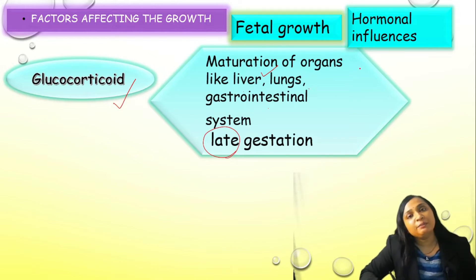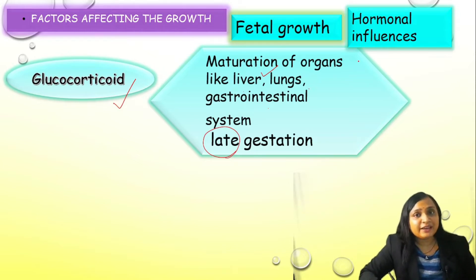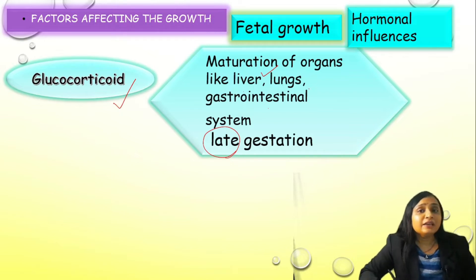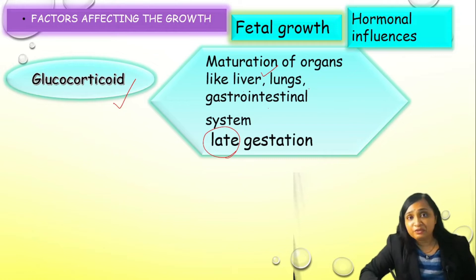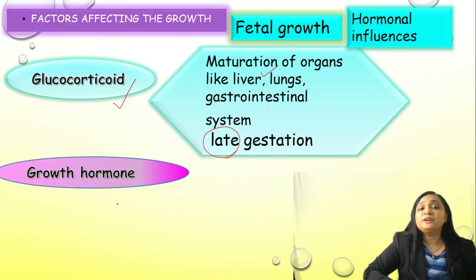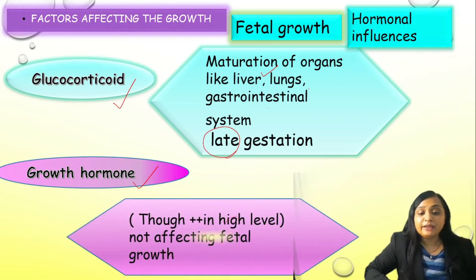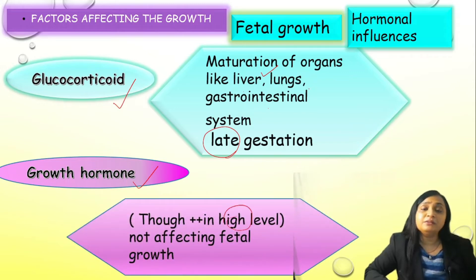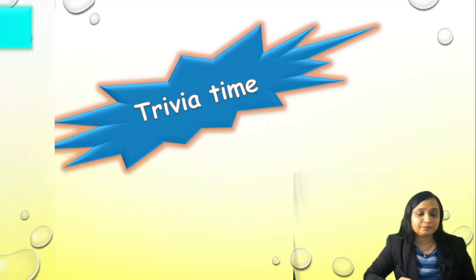That is why when a pregnant female is having a threatened preterm, we give her steroids for the maturation of liver and lung, so the newborn will not suffer with hyaline membrane disease. Last but not least is growth hormone — it is found at a very high level in the fetus but it does not have any effect on the growth of the fetus.